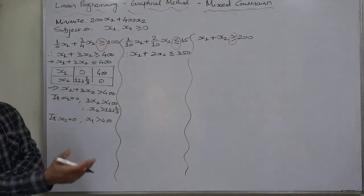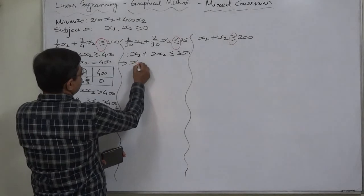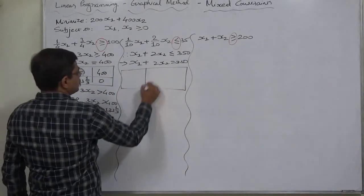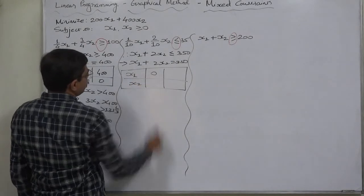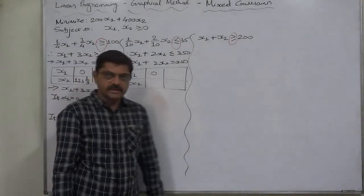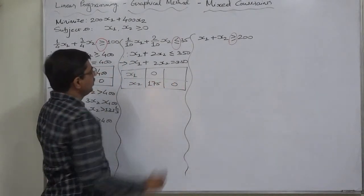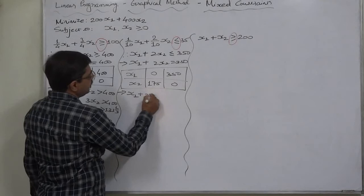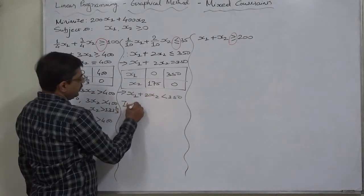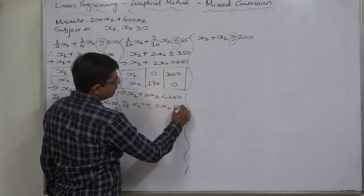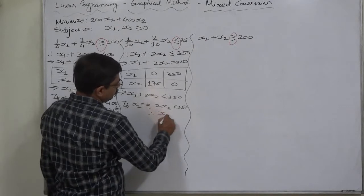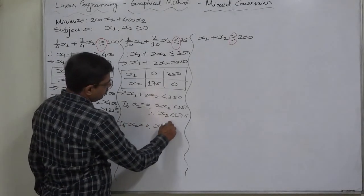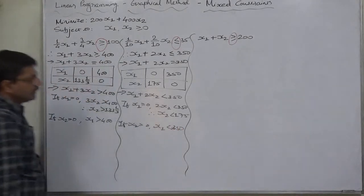The equation for the second constraint is x1 plus 2x2 equals 350. The two points to draw the straight line: if x1 is 0, then 2x2 equals 350, so x2 equals 175. If x2 is 0, then x1 equals 350. For the inequality x1 plus 2x2 less than 350: if x1 is 0, then x2 is less than 175.